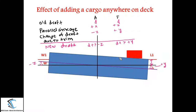This is how you calculate the new draft when adding cargo anywhere on the deck. The same method applies when discharging cargo — the only difference is that instead of parallel sinkage you get a parallel rise, and instead of adding the value, you subtract it from both drafts. Whether the trim change is plus or minus depends on where you are removing the cargo from.